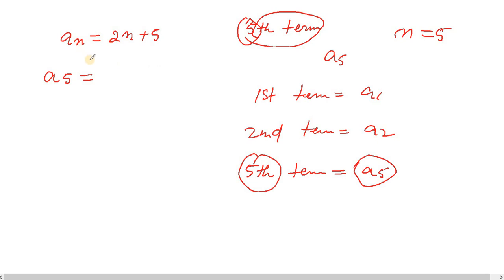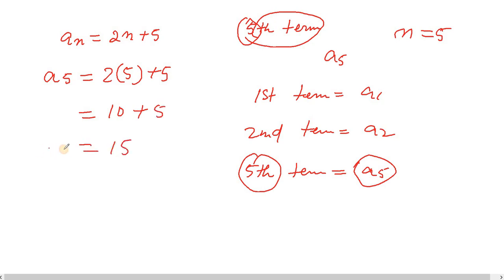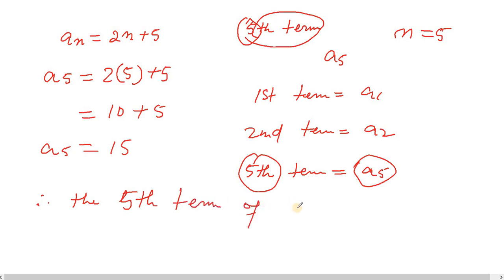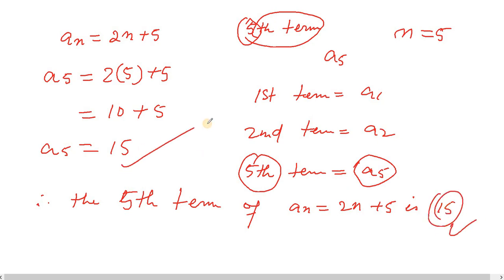Substituting n = 5: a_5 = 2(5) + 5 = 10 + 5 = 15. Therefore, a_5 equals 15. The fifth term of the sequence a_n = 2n + 5 is 15.